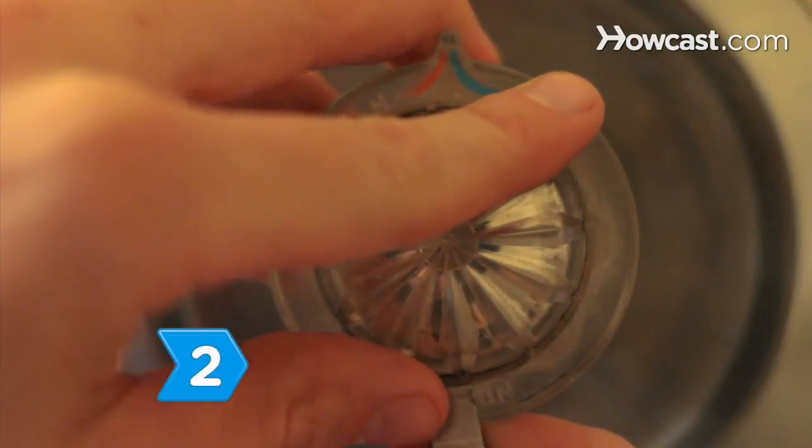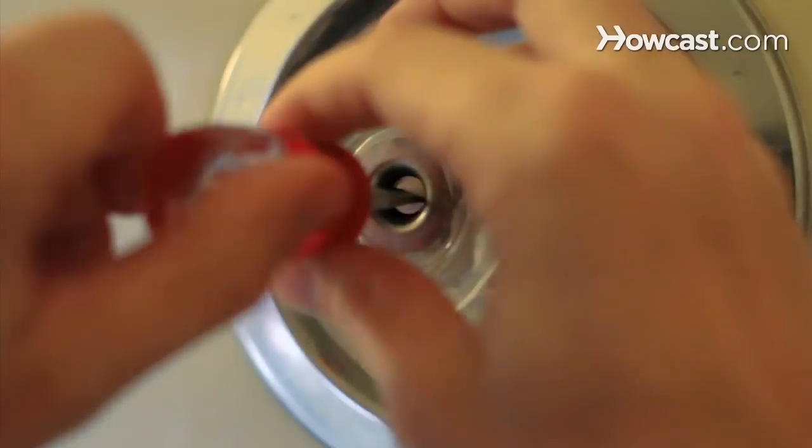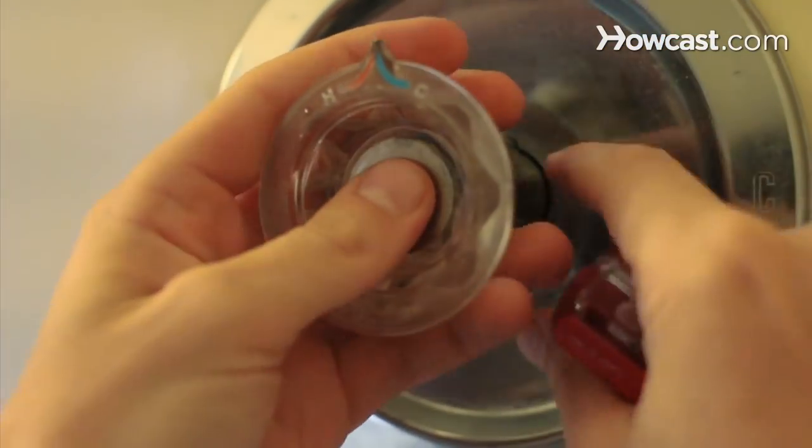Step 2. Remove the cap and screw from the faucet handle using a screwdriver, and take off the handle and escutcheon.